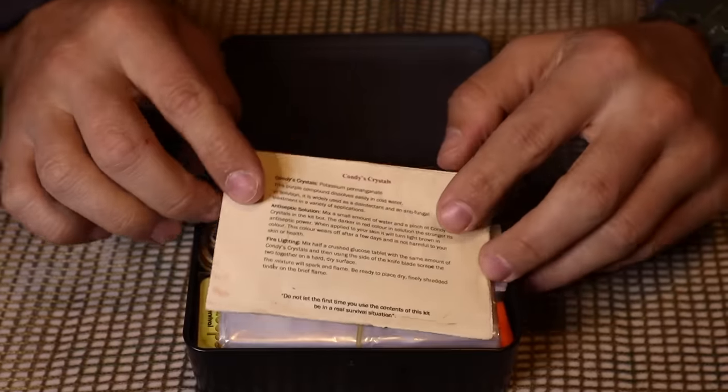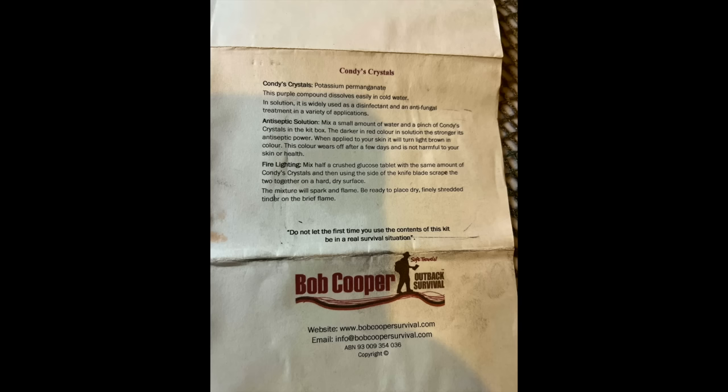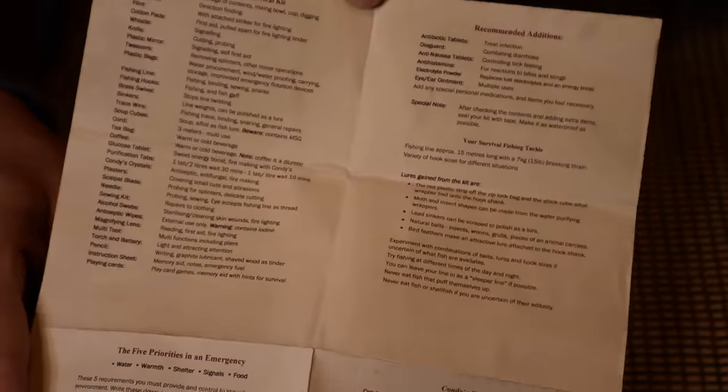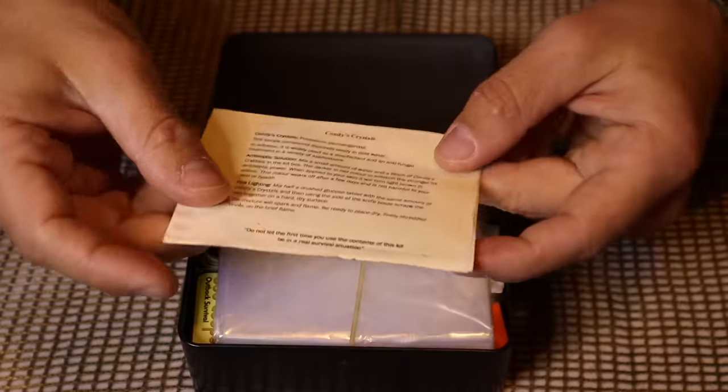First thing on top is going to be our instructions. These instructions, it's one full page of instructions that folds out, and what I'll do for you guys is take a picture and splice it right into the video so you can see the instructions, the kit components, and then some of the ideas that we can use this kit for in any survival situation. In an emergency, we can take this piece of paper and use it as tinder in the fire to get a fire going.